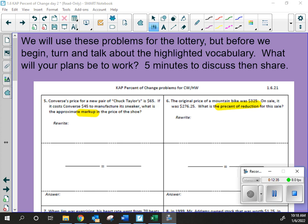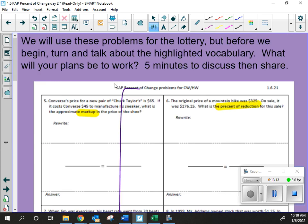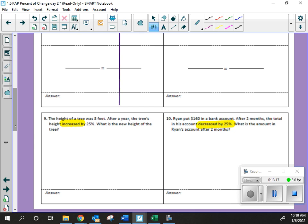So, when I do that, you're still defining the change. On number six, it's talking about the percent of reduction. That just means, yes, Bruno? Basically, the percent of decrease, which would be percent of change. Very good. Percent of change, how much is it going down? Reduction just means to go down. On number nine, the height of the tree was eight feet after a year, the tree height increased by 25%. What is the new height? So, on this one, because it's increased by 25, is it going up or down? It's going up.